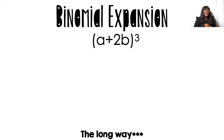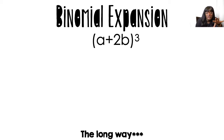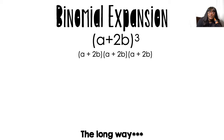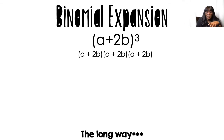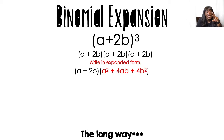So binomial expansion. I have parentheses A plus 2B to the power of 3. This is the long way — you don't have to write this part down. I just want to show you that this is the long way. Some of my students like doing it like this, but you don't have to. So you would write it in expanded form: A plus 2B cubed means A plus 2B times A plus 2B times A plus 2B. Then you would multiply the last two: A times A, A times 2B, 2B times A, 2B times 2B. Simplify, combine like terms — that's how I got what's in red.